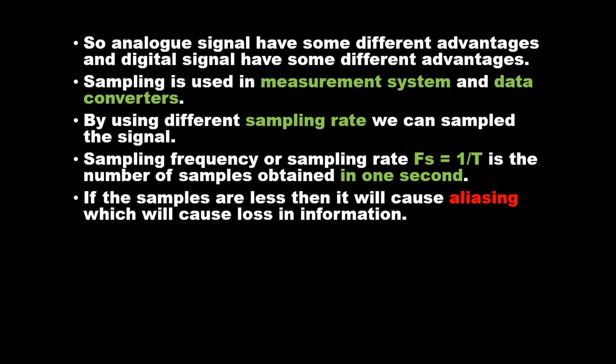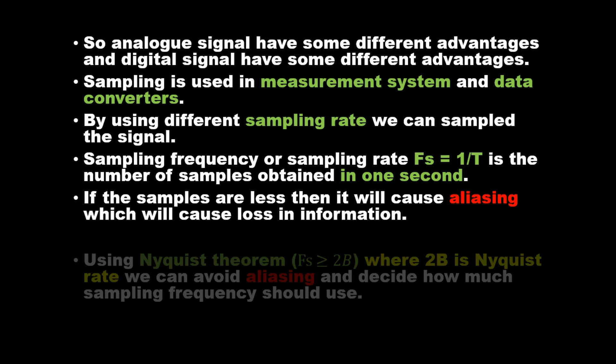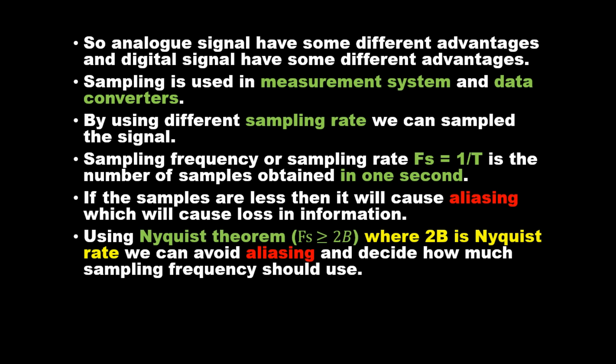If the samples are less then it will cause aliasing which will cause loss in information. Using Nyquist theorem, fs is greater than or equal to 2B, where 2B is Nyquist rate, we can avoid aliasing and decide how much sampling frequency should be used.